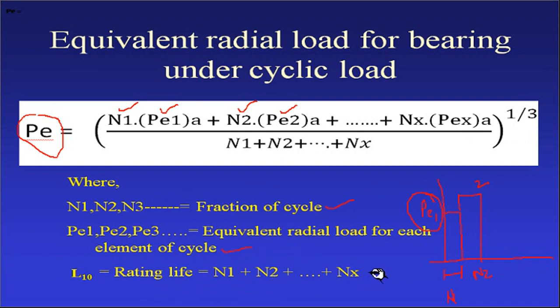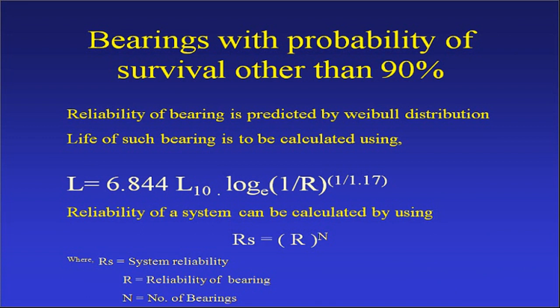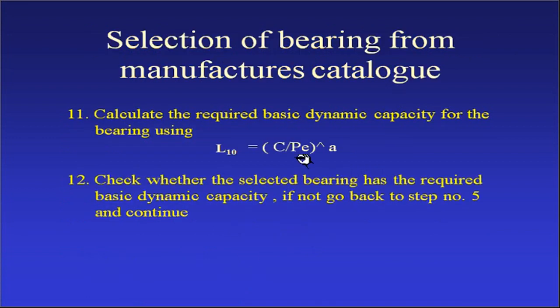The total rating life is given by the sum of N1, N2, N3 up to Nx. This relationship is required to find the equivalent radial load under variable cyclic conditions. In the next presentation, numerical problems will be solved using the equivalent load formula and bearing selection with probability of survival other than 90 percent. Thank you.